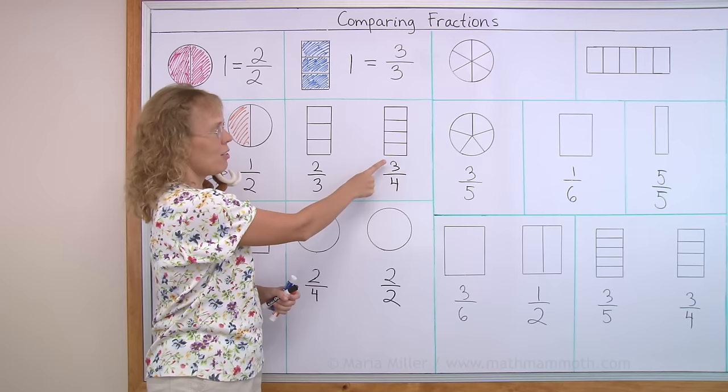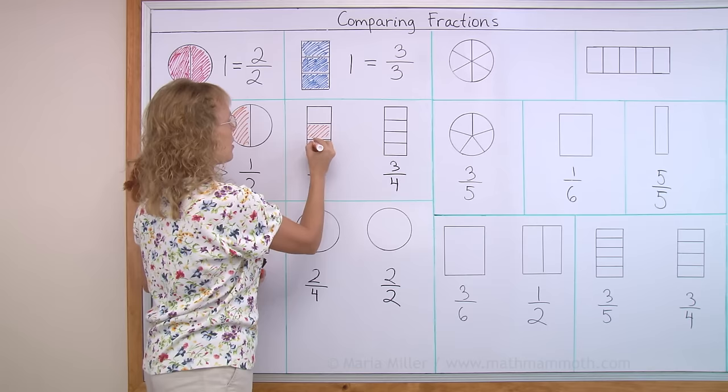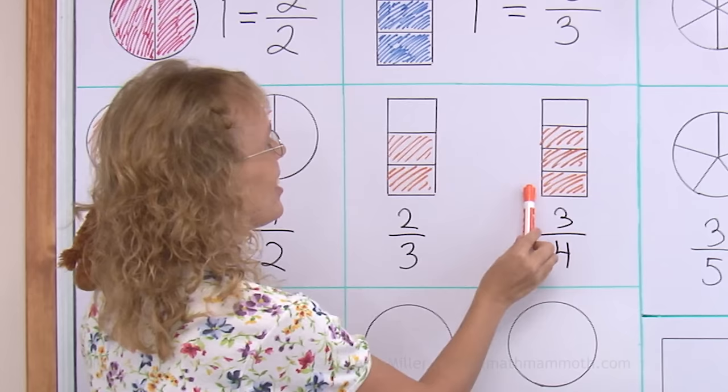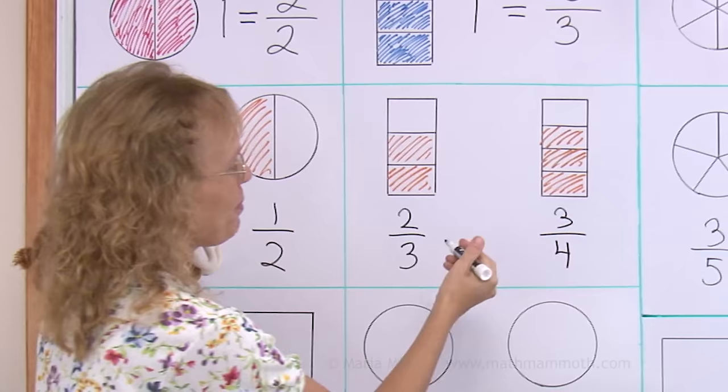Over here, two thirds, and what fraction is this? Three fourths. So I need to color again, two thirds and three fourths. And which one is more chocolate bar to eat? You can see over here, this one is a little higher, so that's the greater fraction.